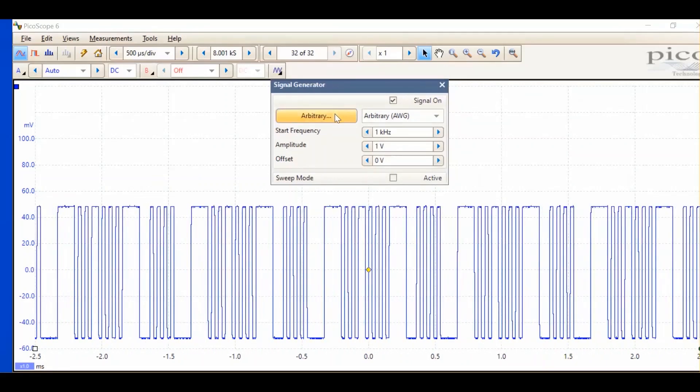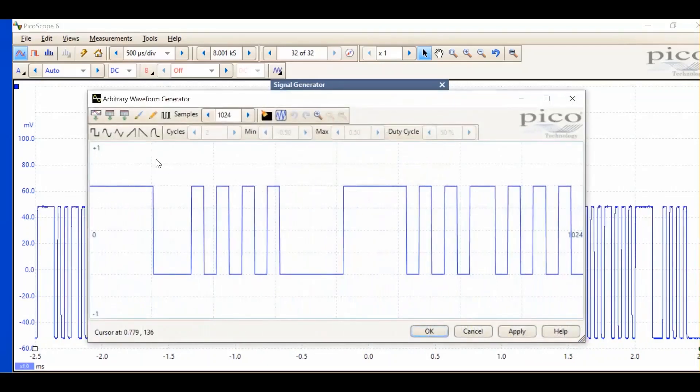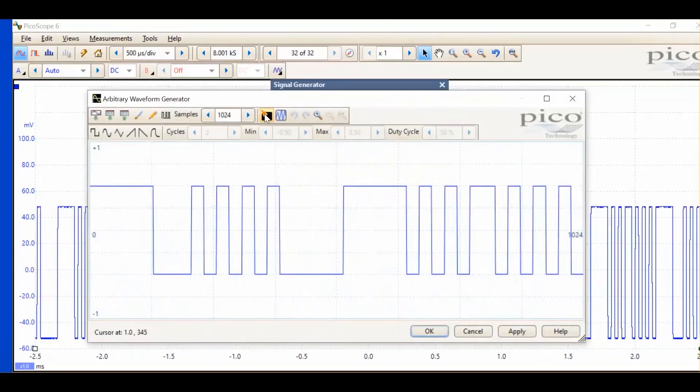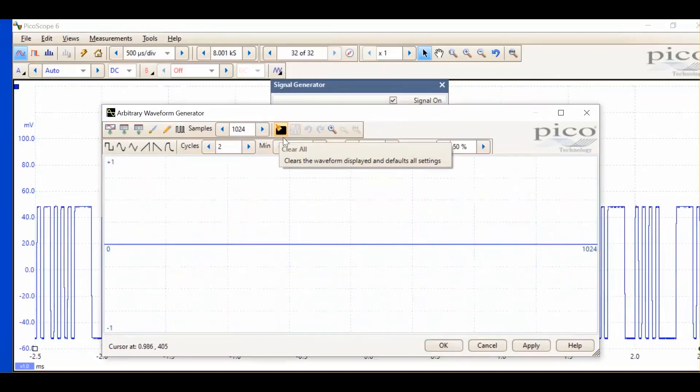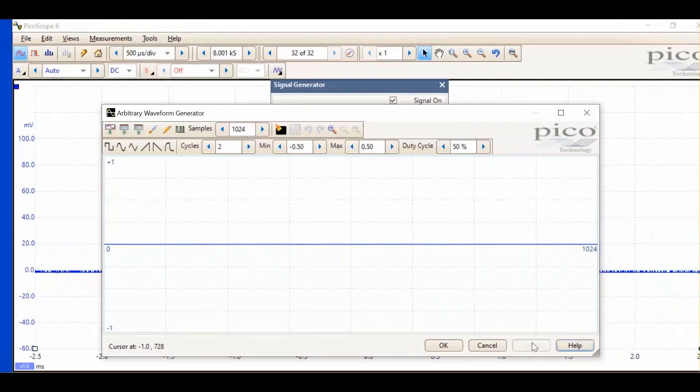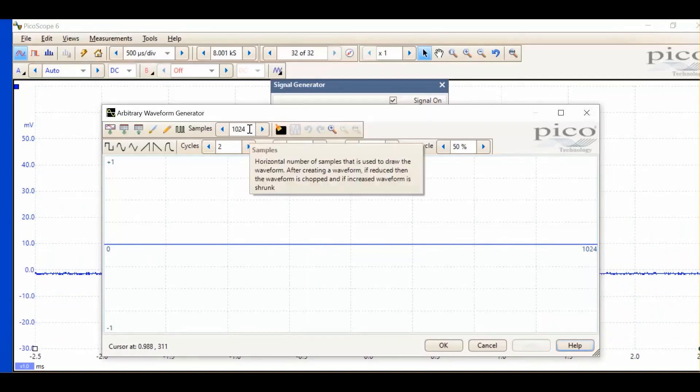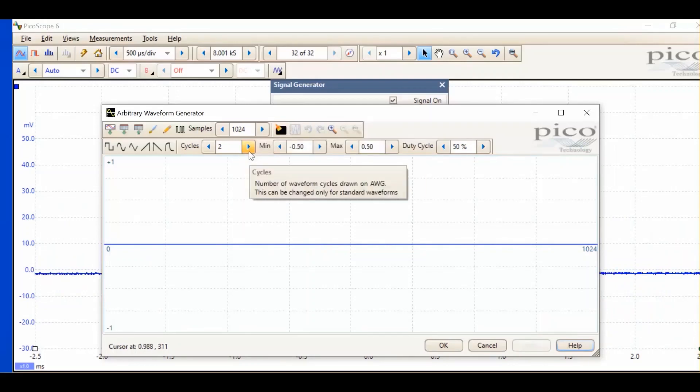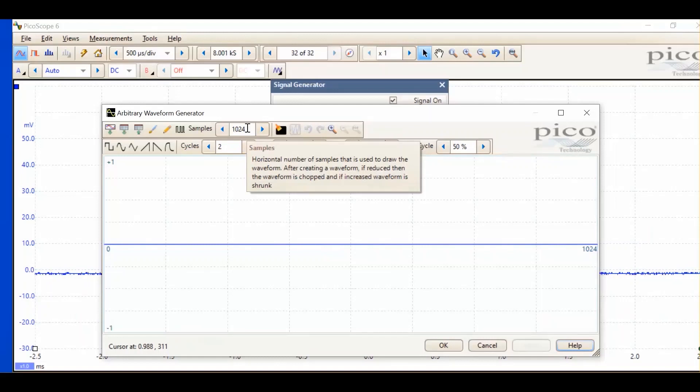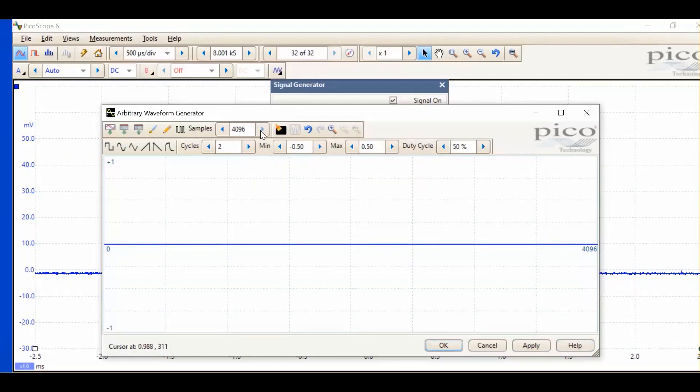If we return to the arbitrary menu, we see this button which is clear all, and apply. This control shows the number of samples used to draw the waveform. For the waveform I want to produce, we're going to need a few more samples. Let's put that up to the maximum, which is 4096.